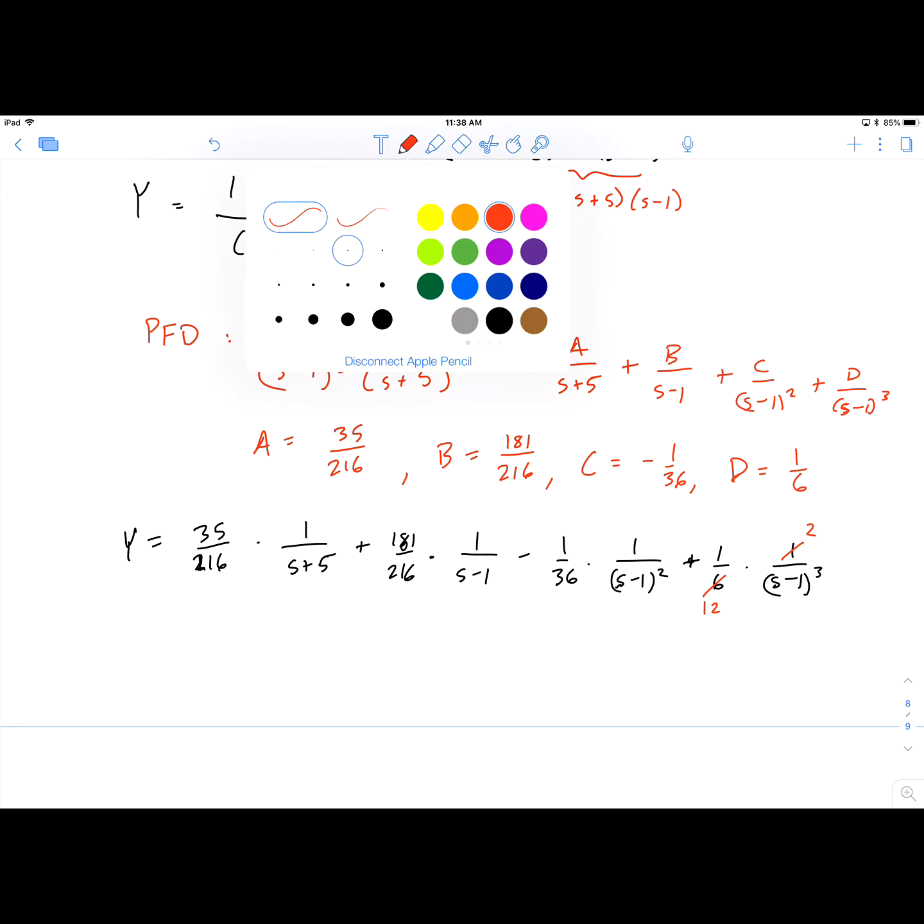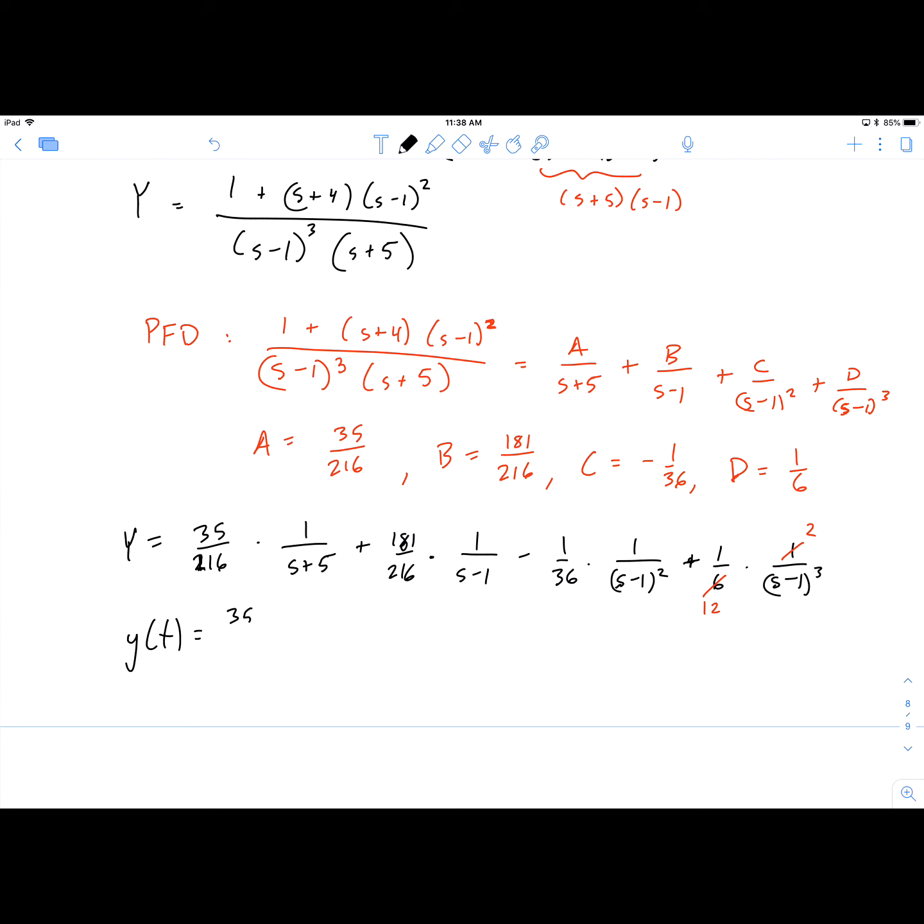So what this means is that little y(t) is 35/216 times e^(-5t) plus 181/216 e^t minus 1/36 te^t plus 1/12 t²e^t.